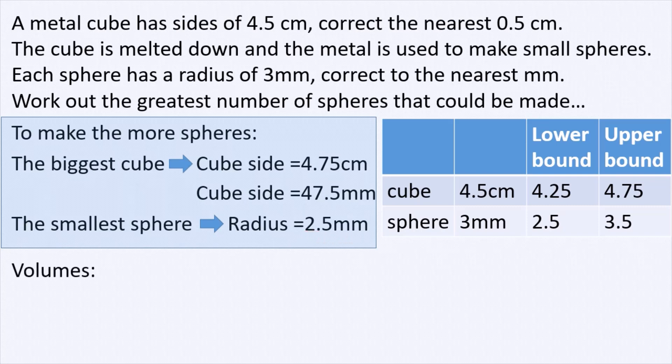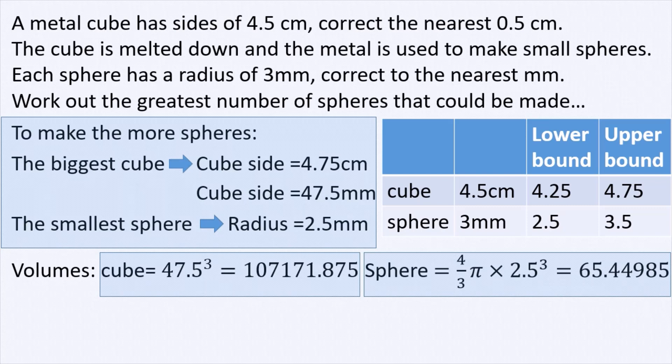Now we first get the volume of the cube, of the largest cube, which is 47.5 millimeters cubed. And if you work this out on your calculator, you get this number and the volume of the sphere. You need to know this formula: it's 4 over 3 pi multiplied by the cube of the radius. So since the smallest radius is 2.5 millimeters, we multiply 4 over 3 by pi and then multiply the result by 2.5 cubed. And this gives us 65.44985 millimeters cubed.